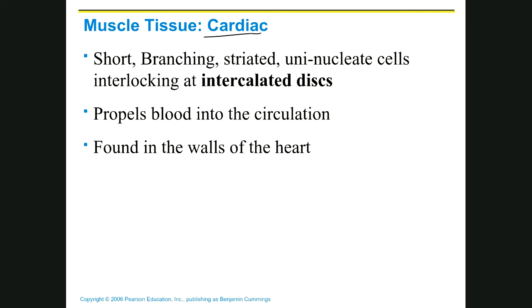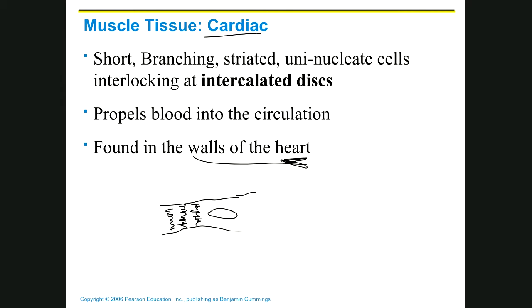Let's look at cardiac muscle. Cardiac muscle is only found in the heart — in the walls of the heart. When you look at it, it has some similarities to skeletal muscle because it's also striped and has striations. But that's where the commonalities end, because it's only got one nucleus, they're not cylinder-shaped, they're sort of branched cells, and they're not long — they're short.